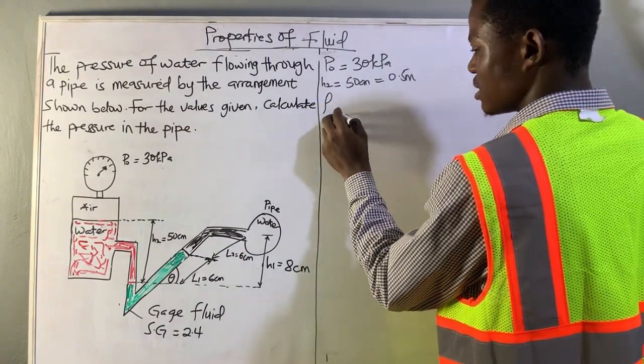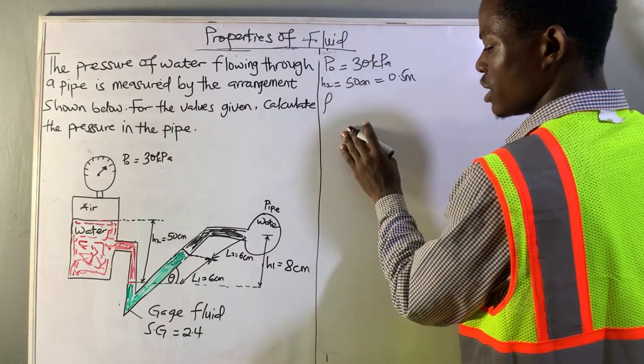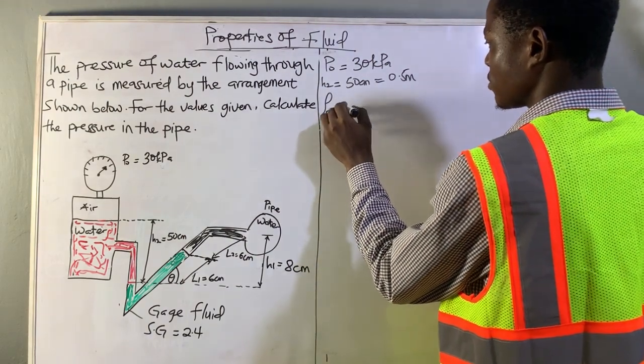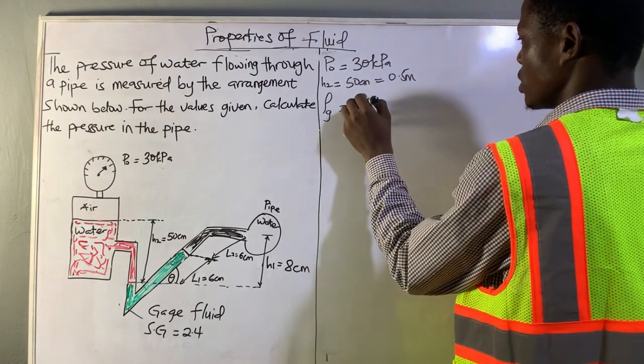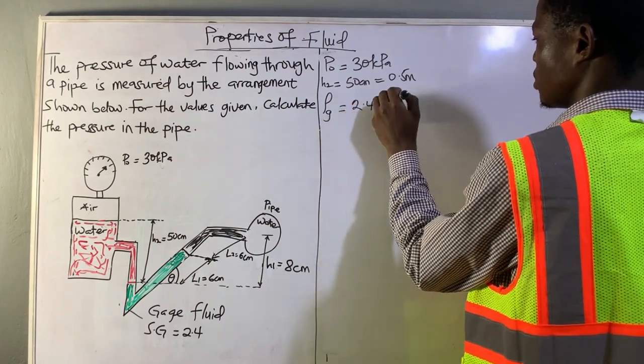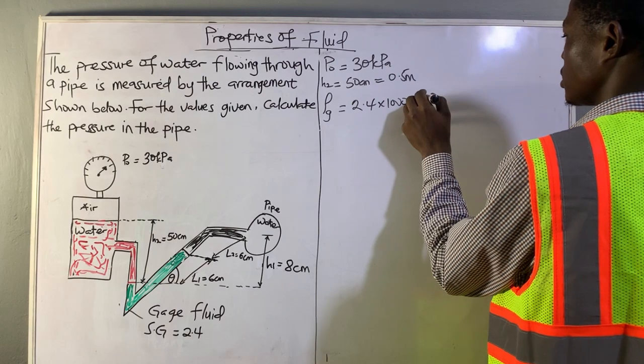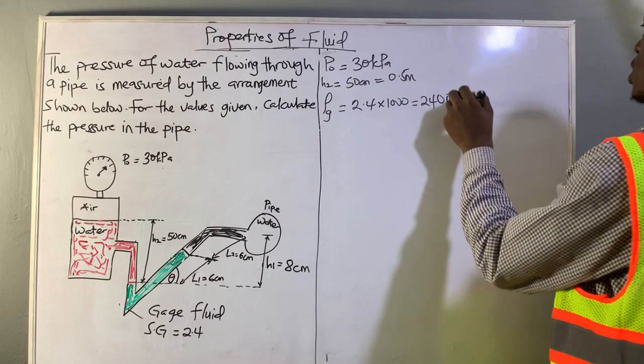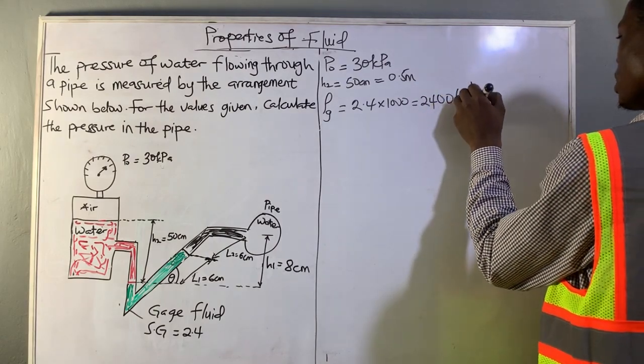We can find its density by multiplying it by the density of water. So let's write the density of the gauge fluid, denoted by G. That's 2.4 times 1000, which will give us 2400 kilograms per meter cubed.